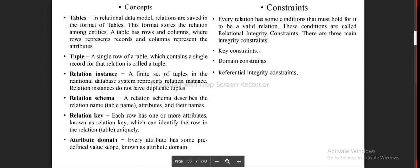Relation Key: Each row has one or more attributes Known as Relation Key which can identify the row in The Relation Table uniquely. Attribute Domain: Every attribute has some predefined value scope known as attribute domain.